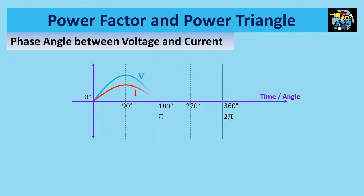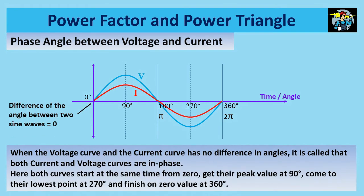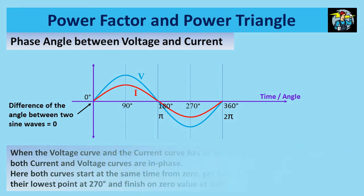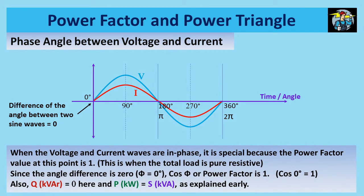Let's see what the phase angle between voltage and current is. When the voltage curve and the current curve have no difference in angles, it is called that both current and voltage curves are in phase. Here both curves start at the same time from zero value, get their peak value at 90 degrees, come to their lowest point at 270 degrees, and finish on zero value at 360 degrees. When the voltage and current waves are in phase, it is special because the power factor value at this point is 1. This is when the total load is pure resistive. Since the angle difference is zero here, cos phi or power factor is 1. Also reactive power Q equals zero, hence active power P equals apparent power S.